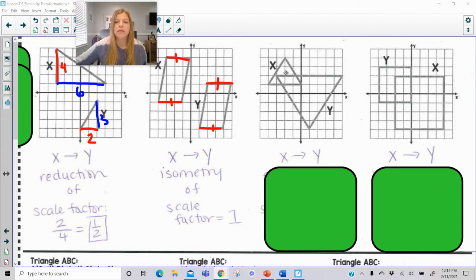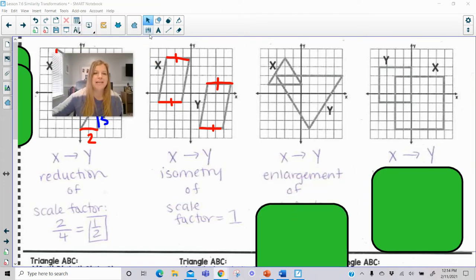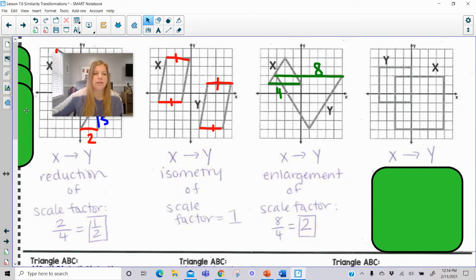From X to Y here, from X to Y is clearly an enlargement. And now if I wanted to find my scale factor, a length of 4 becomes a length of 1, 2, 3, 4, 5, 6, 7, 8. So to go from 4 to 8 would be to undergo a scale factor of 2.